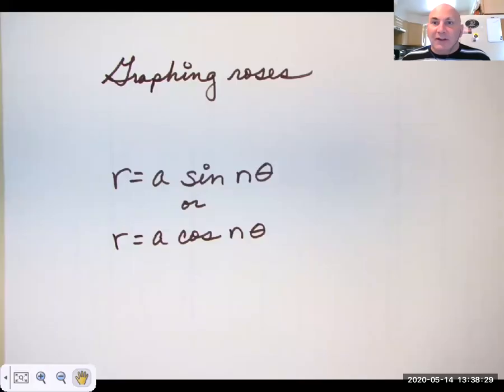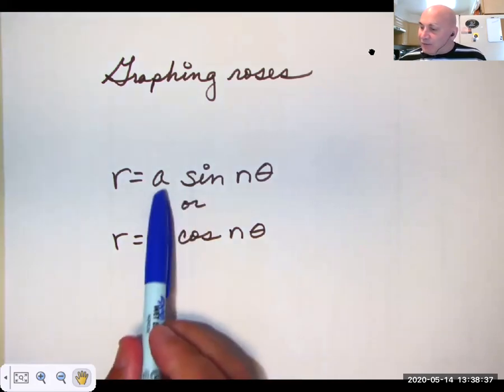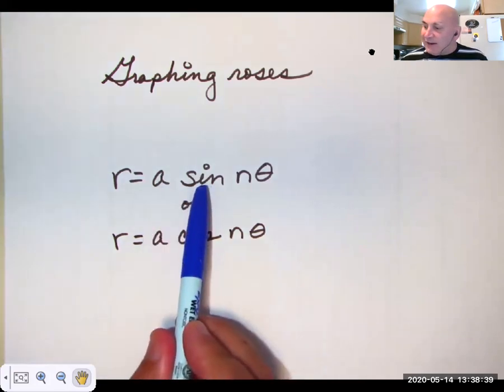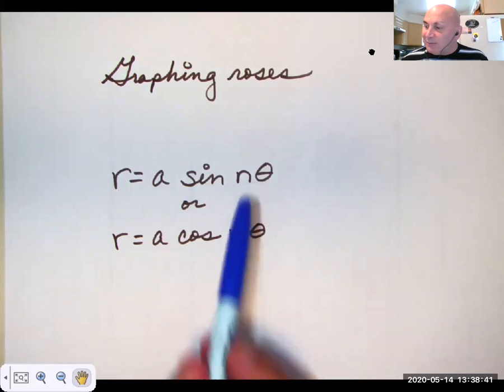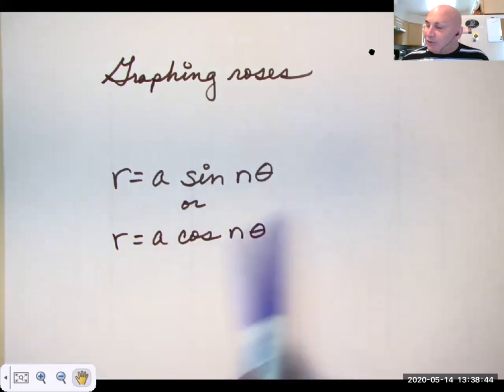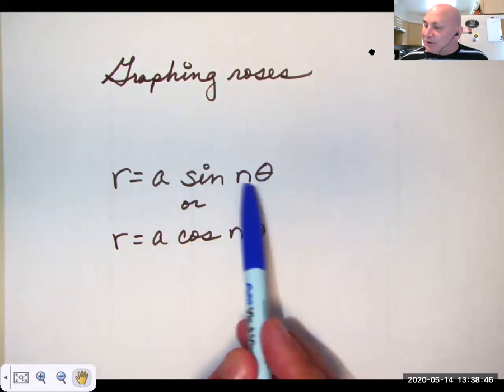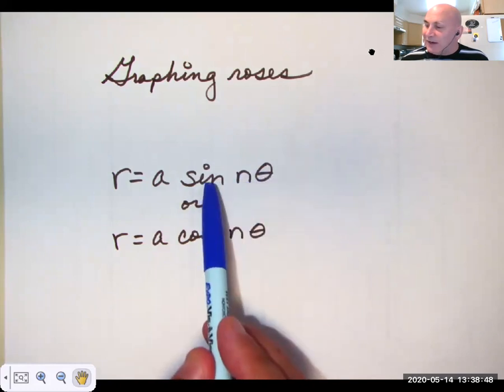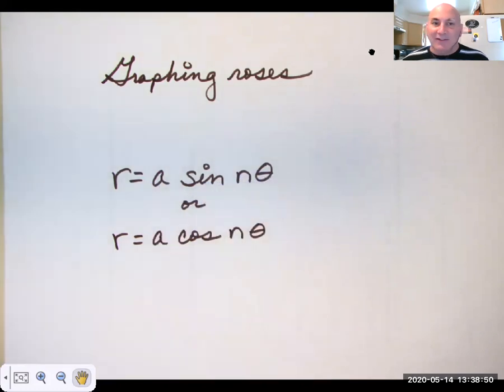So a rose can be graphed in polar coordinates with one of these two equations: either r equals some constant times the sine of another constant times theta, or cosine. So this means we're going to take theta, multiply it by n, take the sine of it, and then multiply it by some constant a. Same here for cosine.